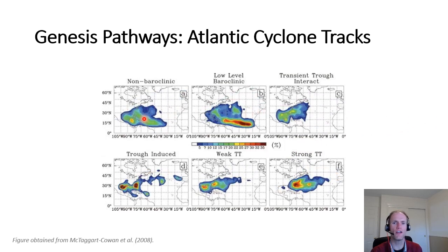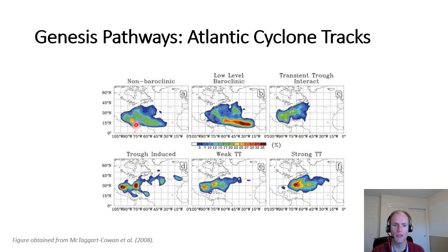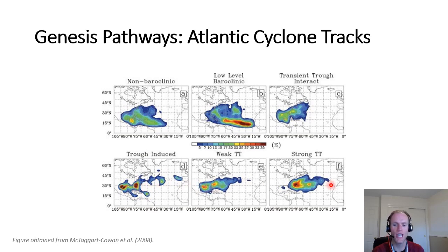We can also look at track density — shading to highlight areas with the most overlap of track lines. The non-baroclinic extends from the tropical Atlantic and northwestern Caribbean Sea toward the north and west. The low-level baroclinic extends off the coast of Africa, moving west-northwest toward North America. Whereas trough-induced and weak tropical transition have their maxima near North America — the Gulf of Mexico and near Florida — while strong tropical transition cases are centered out over the open waters of the North Atlantic.